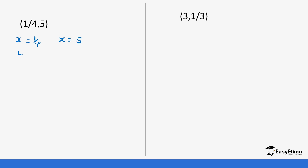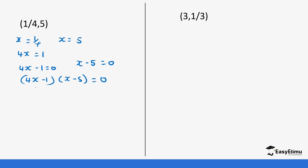So x equals one quarter and x equals 5. This becomes 4x equals 1, so 4x minus 1 equals 0. Then we have (4x minus 1) times (x minus 5) equals 0.